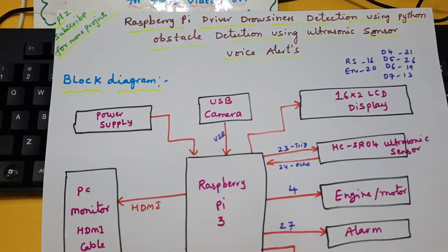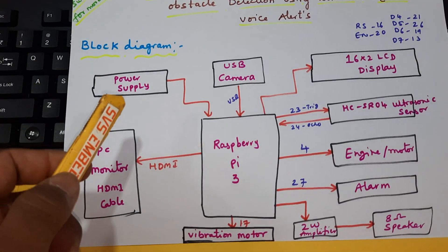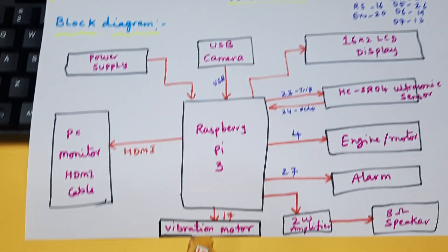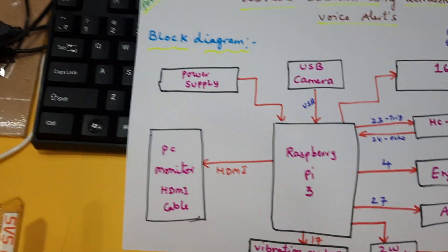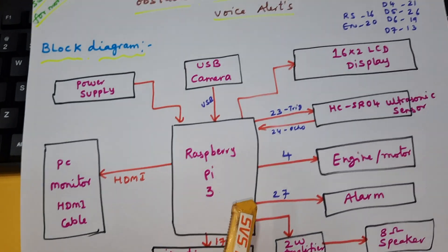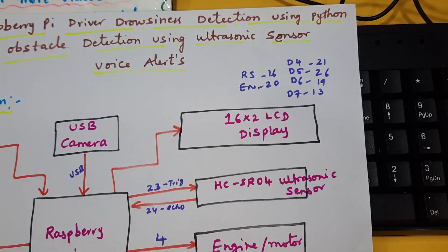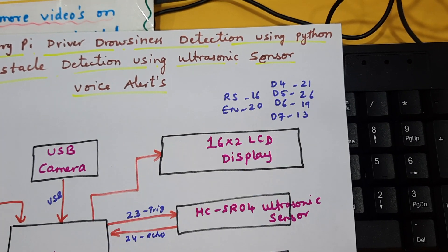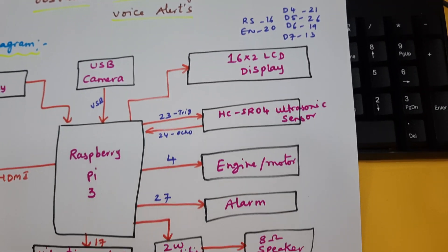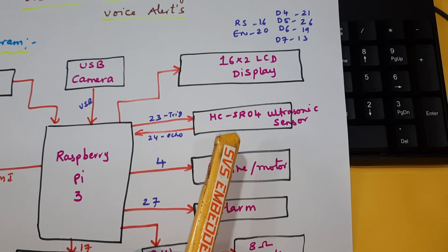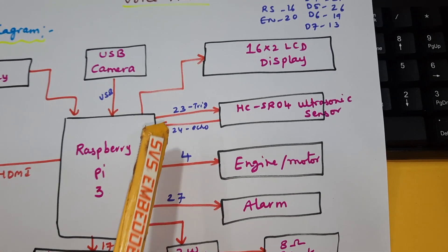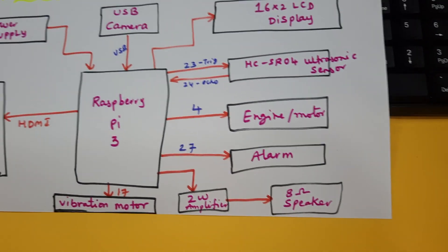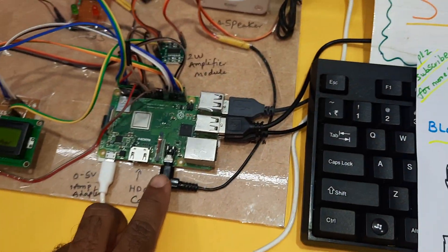Coming to the block diagram: there is a Raspberry Pi 3, USB camera, power supply module 5 volts with 2 amp adapter, vibration motor, HDMI cable connected to a 16x2 LCD display. LCD pins RS, EN, D4, D5, D6, D7 are connected to GPIO pins 16, 20, 21, 26, 19, 13. The HC-SR04 ultrasonic sensor is connected with trigger and echo on pins 23 and 24, engine on pin 27, and an 8-ohm speaker.